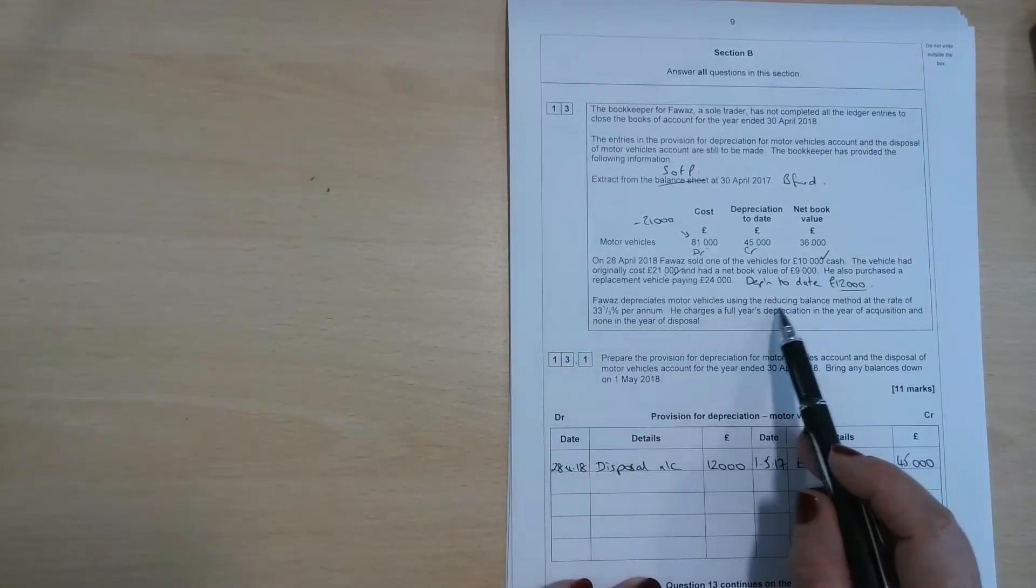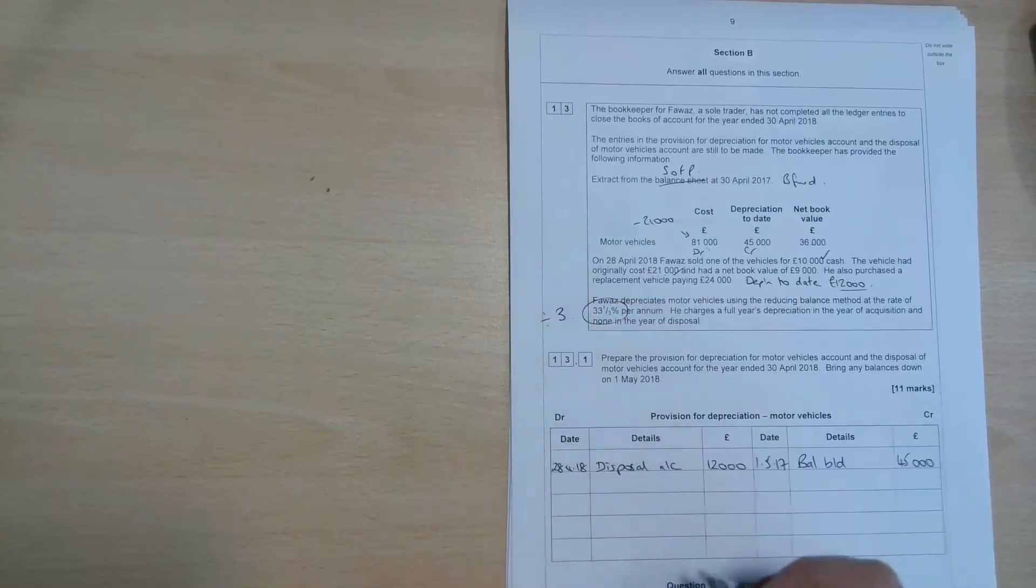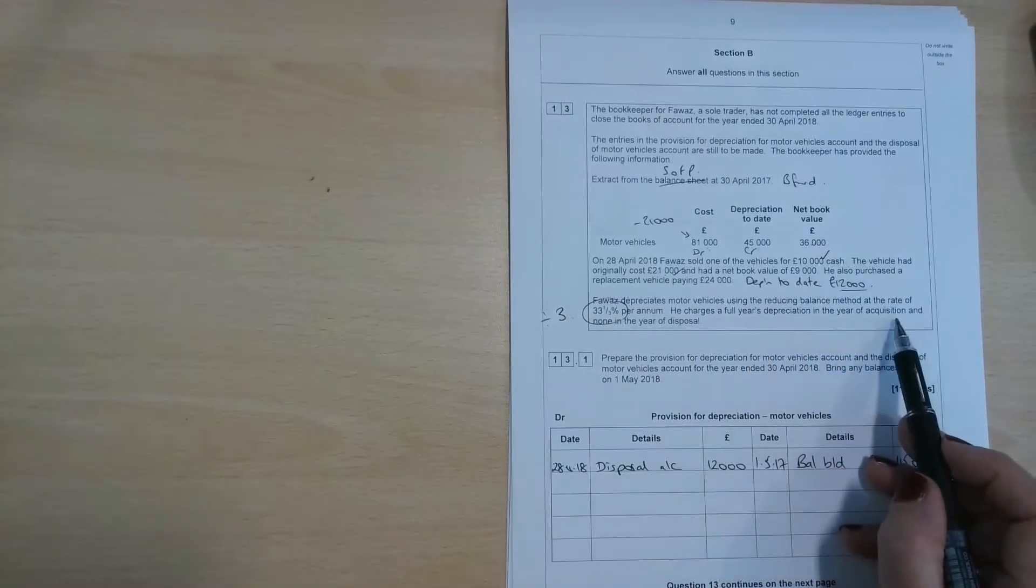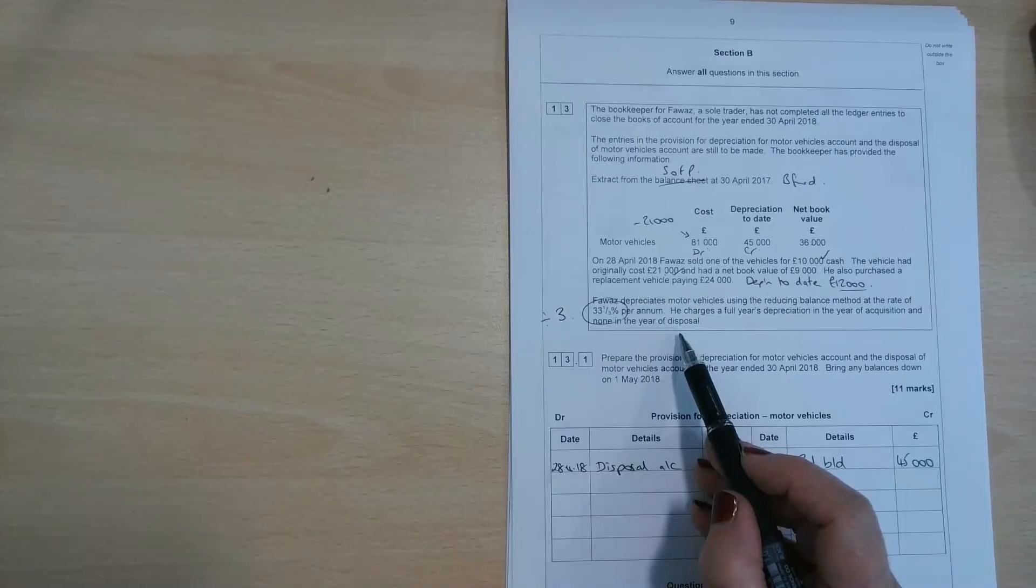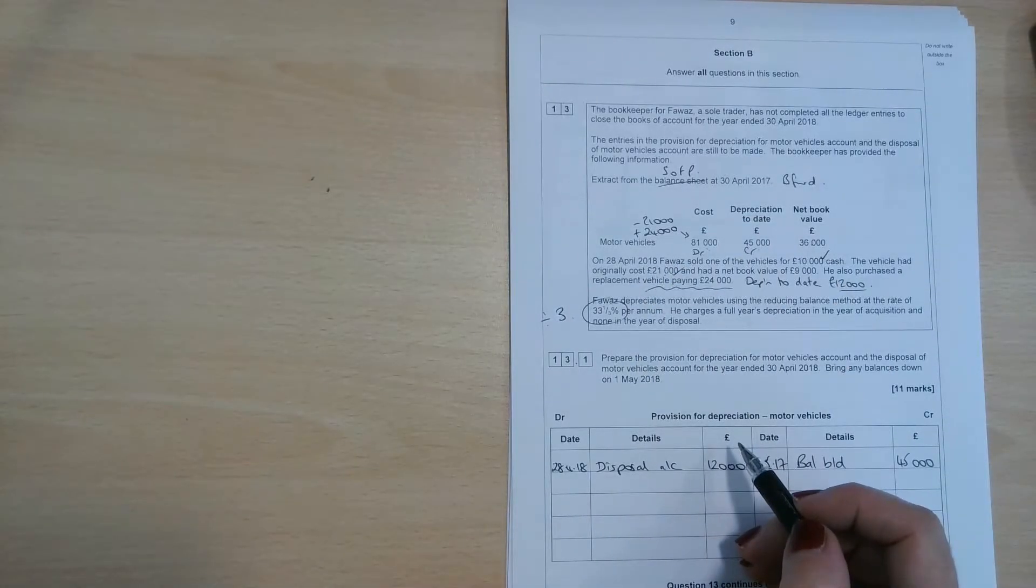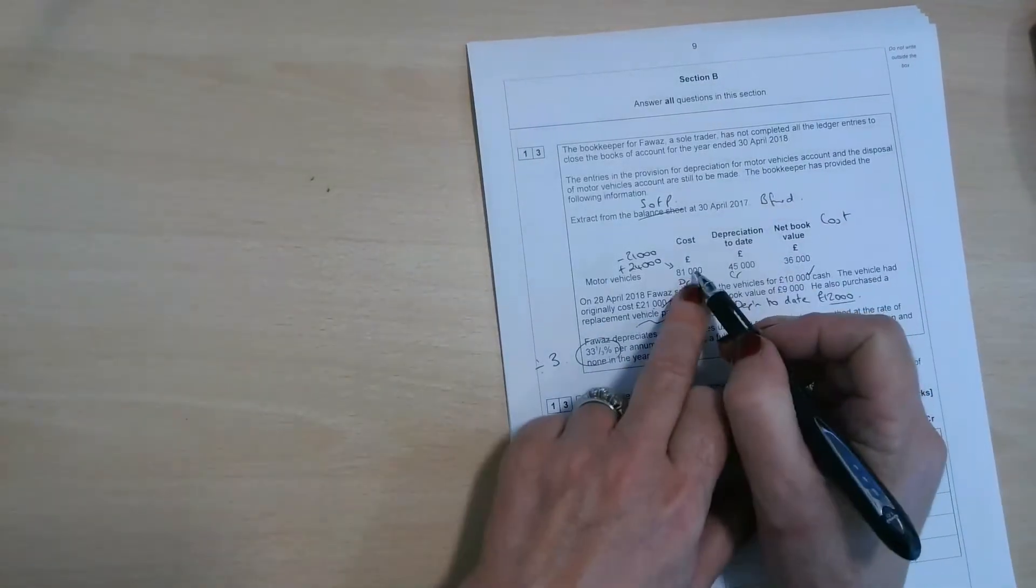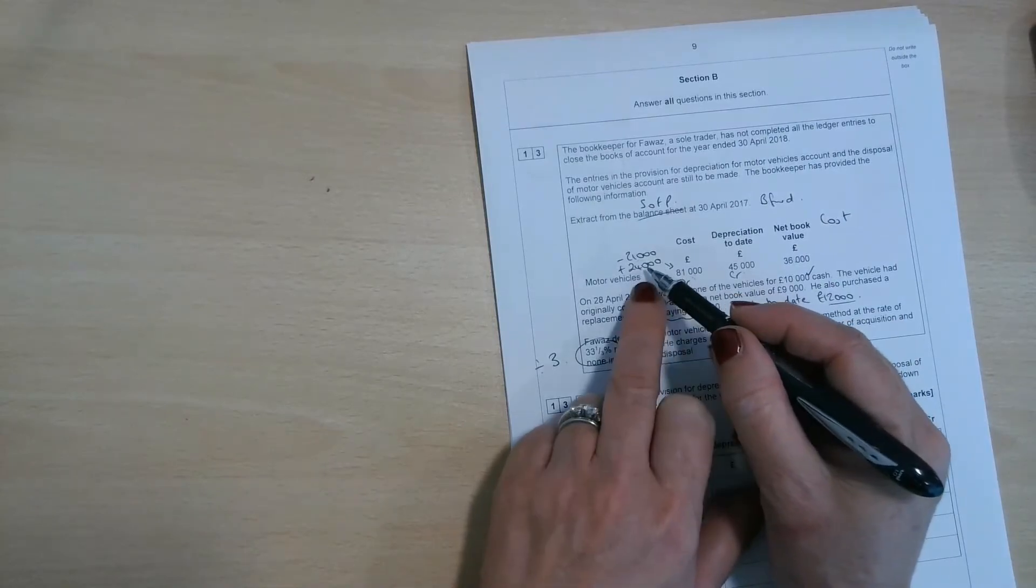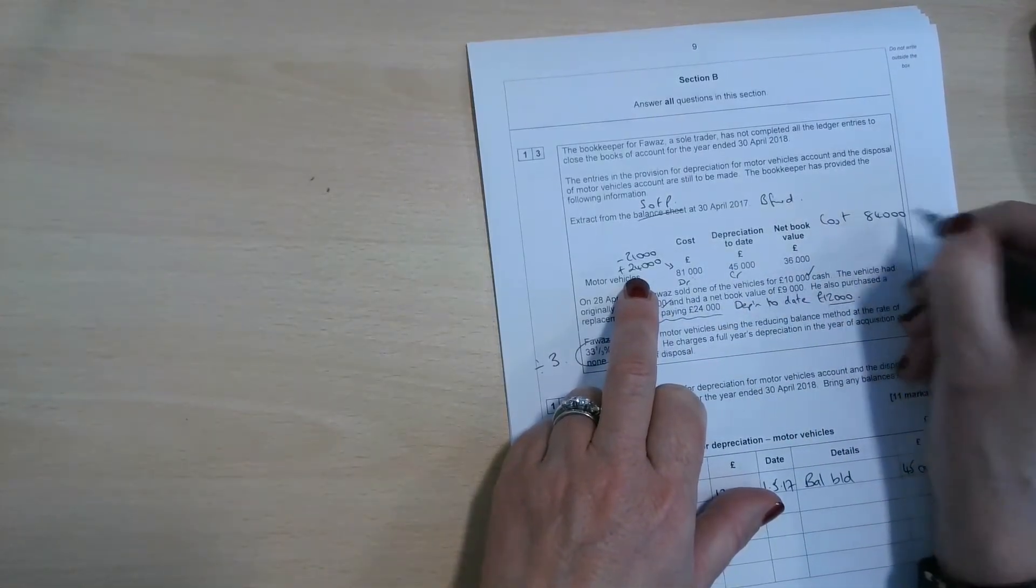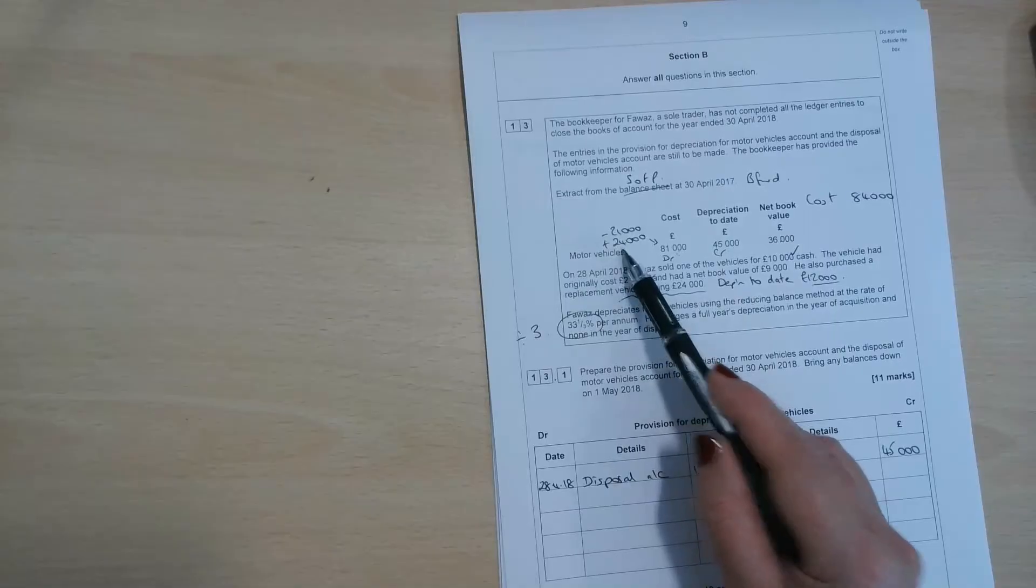If we go back to the question, it tells us that Fawaz depreciates motor vehicles using the reducing balance method at the rate of 33 and a third percent per annum. So remember, divide the net book value by three. Don't try and do 33 and a third in your calculations. He charges a full year's depreciation in the year of acquisitions when we buy the assets and none in the year of disposal. Now, we need to take into account the fact that he's bought an extra vehicle costing £24,000. So what we need to do in order to work out this year's depreciation is work out how much is left in the cost. So we had £81,000, we took off £21,000. So that brings us down to £60,000 of the original cost. Plus we've bought another asset costing £24,000. So if we have the T account for cost, that would show us a balance of £84,000. So 81 minus 21 plus 24.